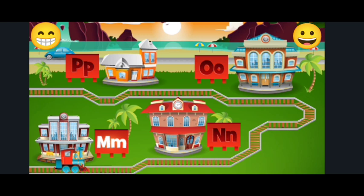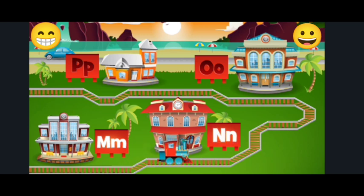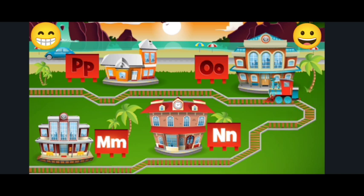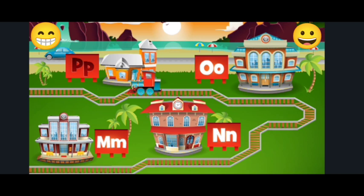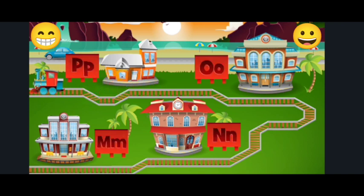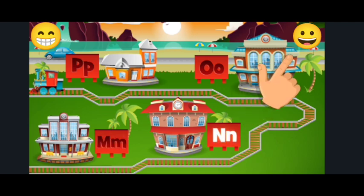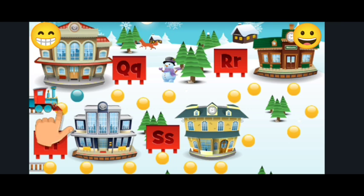Station M. Station N. Station O. Station P. M, N. Let's build the railroad. Slide your finger from the end of the track until the blue dot.